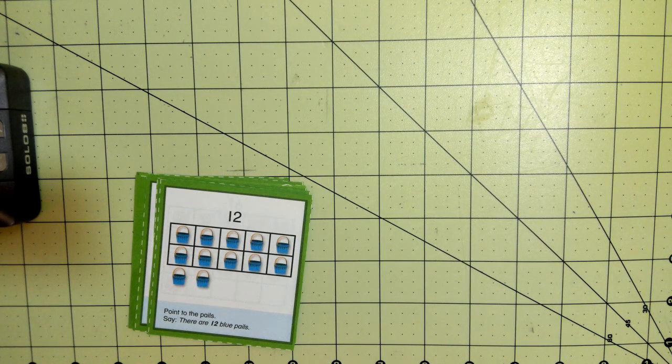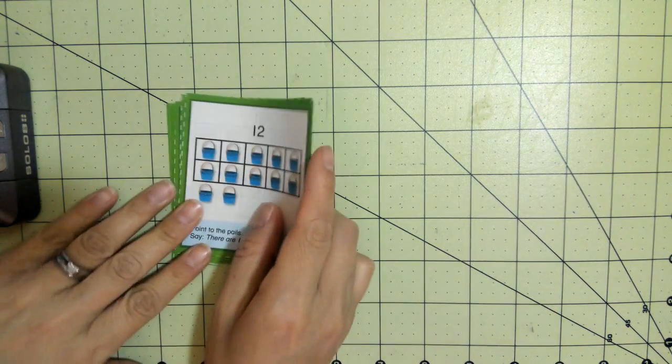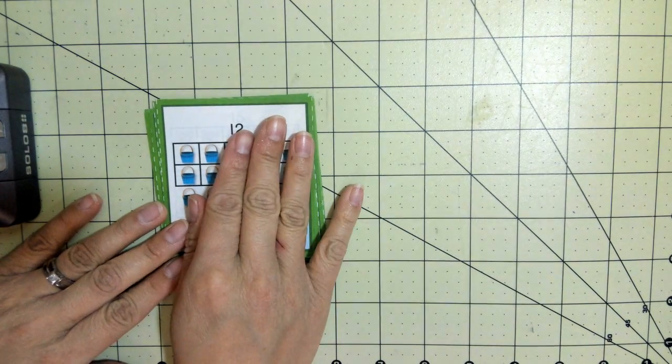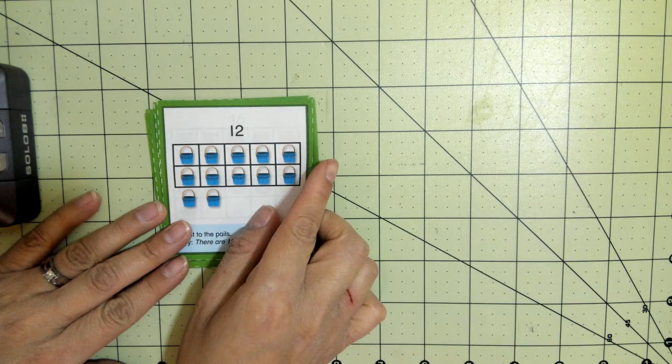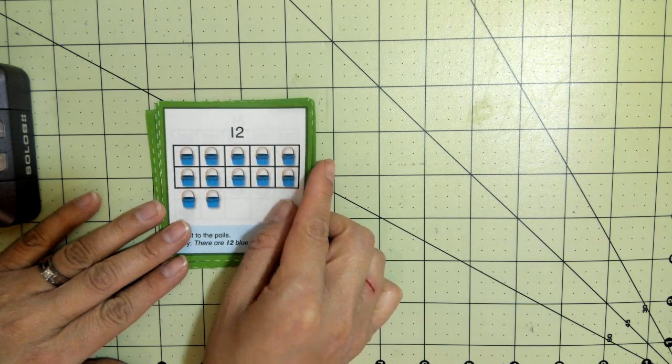Alright boys and girls, today for math we're going to continue reviewing our numbers 11 to 20. So we're going to go over the numbers on the cards and then you'll work on pages 245, 246, and 247 of your Envision Volume 1.